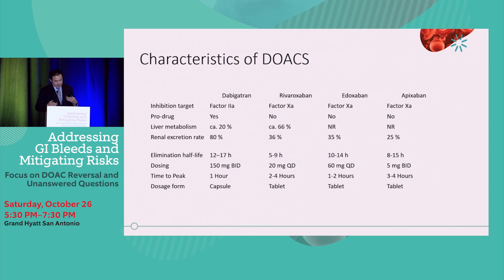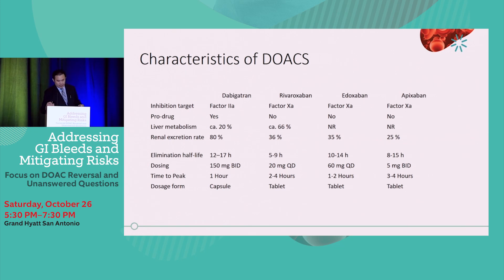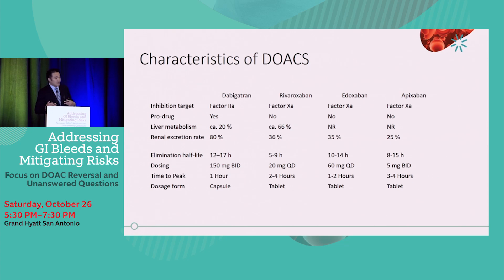Which basically means, assuming it takes about four half-lives for most of the medication to clear — 50%, 25%, 12.5% — the overall elimination of dabigatran should be approximately 48 to 64 hours, rivaroxaban 20 to 45 hours, edoxaban 40 to 56 hours, and apixaban 32 to 45 hours. So basically, if you can support the patient for two days, the medication should be out of the system.